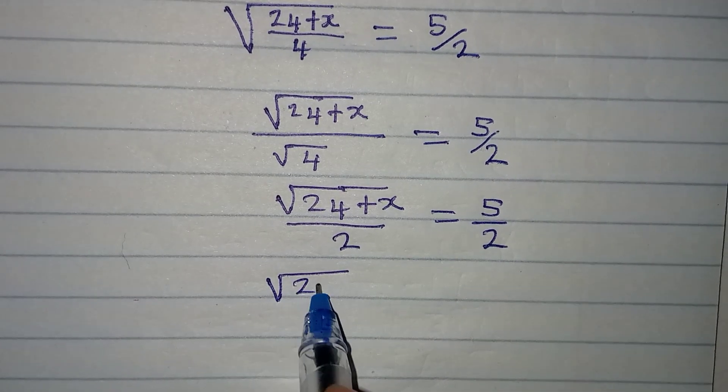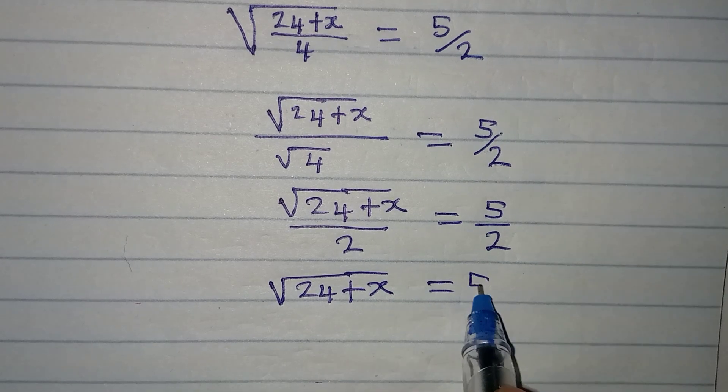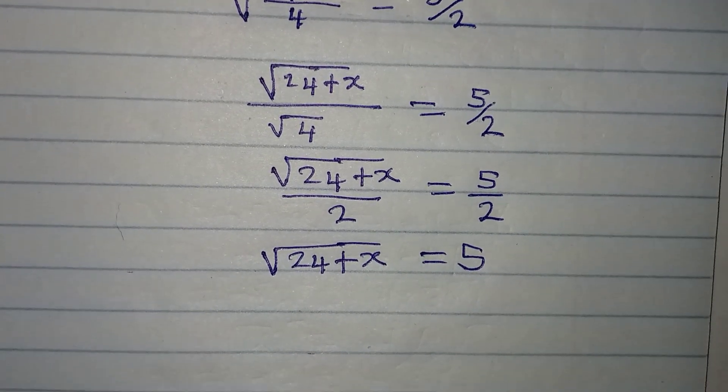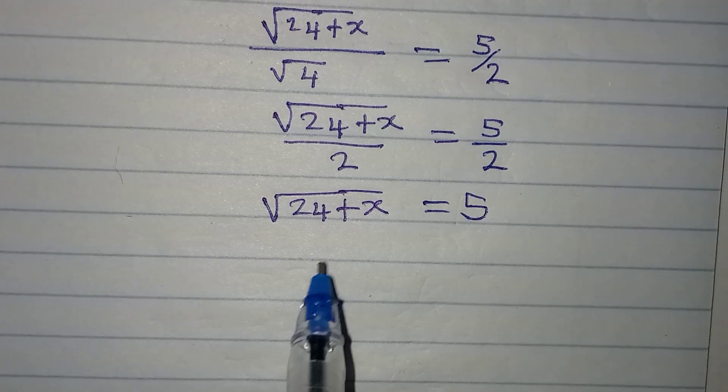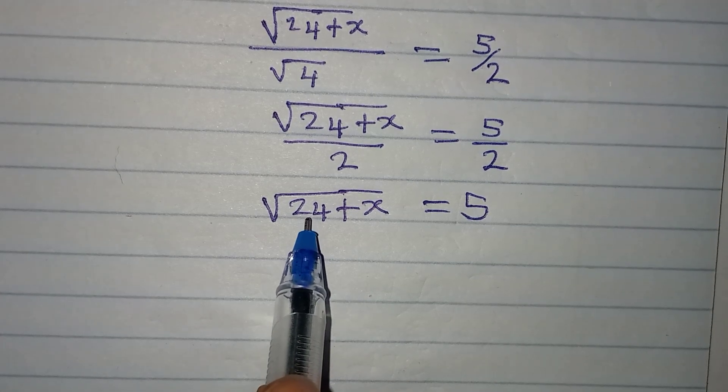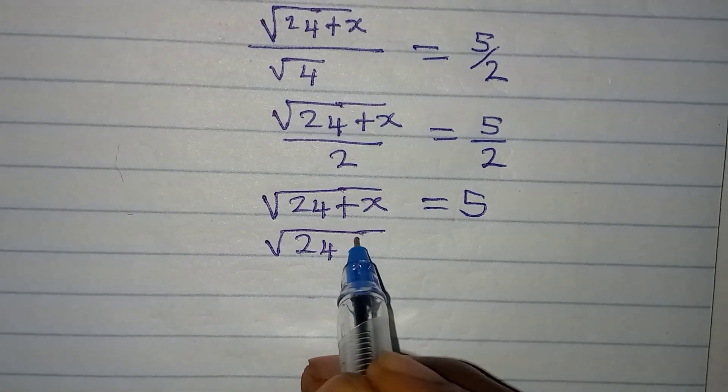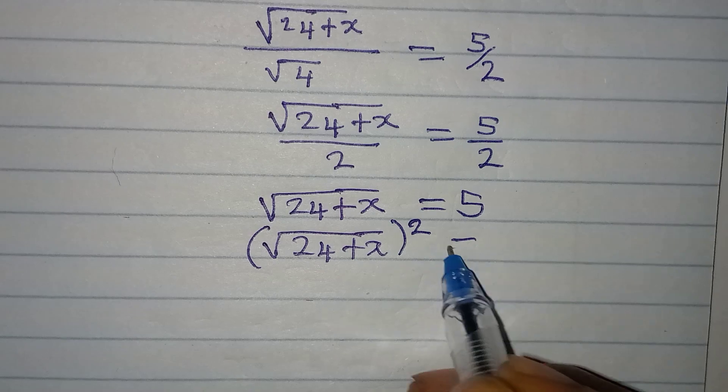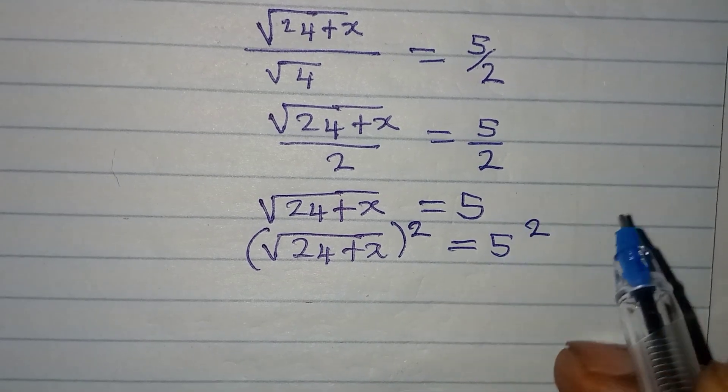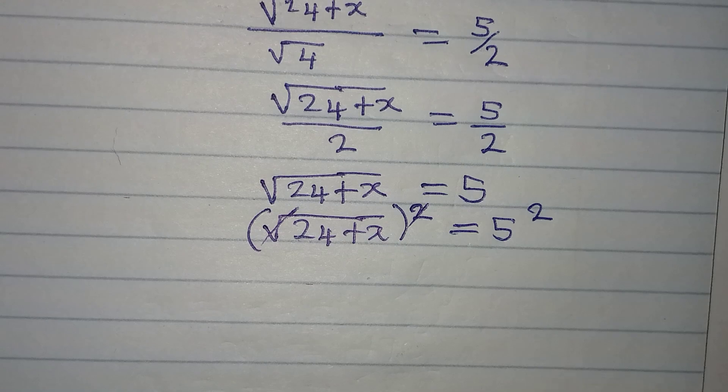The next thing I will do is to remove this square root sign by squaring both sides. 24 plus x will be squared and 5 will also be squared. This and this will cancel so that we will have 24 plus x equals 5 squared.